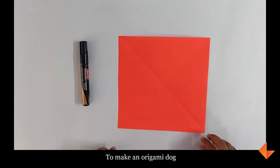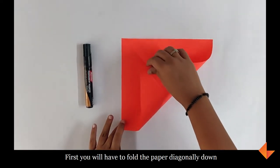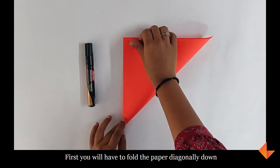To make an origami dog, first you will have to fold the paper diagonally down.